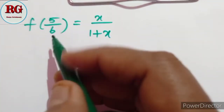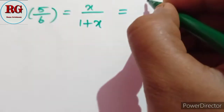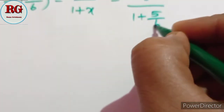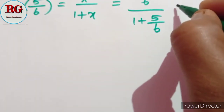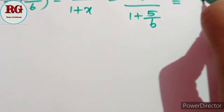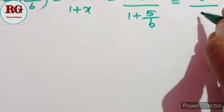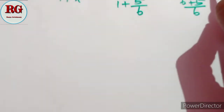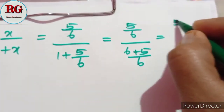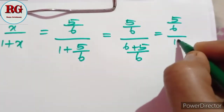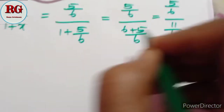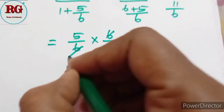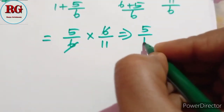Next, f(5/6): using the same formula, (5/6) divided by (1 plus 5/6). Taking LCM gives (5/6) divided by (11/6). Flipping: (5/6) multiplied by (6/11) equals 5/11, which is approximately 0.454.